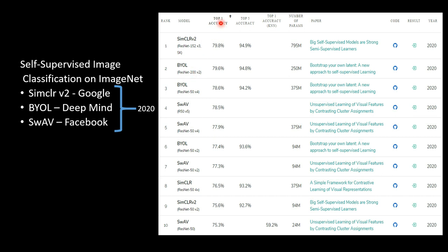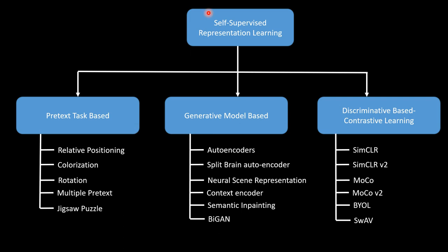This is a snippet from the website Papers With Code showing the top-ranked models based on top-1 accuracy on the ImageNet dataset — these are all self-supervised learning approaches. As you can see, in the top ten are three papers from Google, DeepMind, and Facebook, all published this year in 2020. You can imagine this area is really hot and researchers are investing a lot of time advancing the field of learning from unlabeled data.